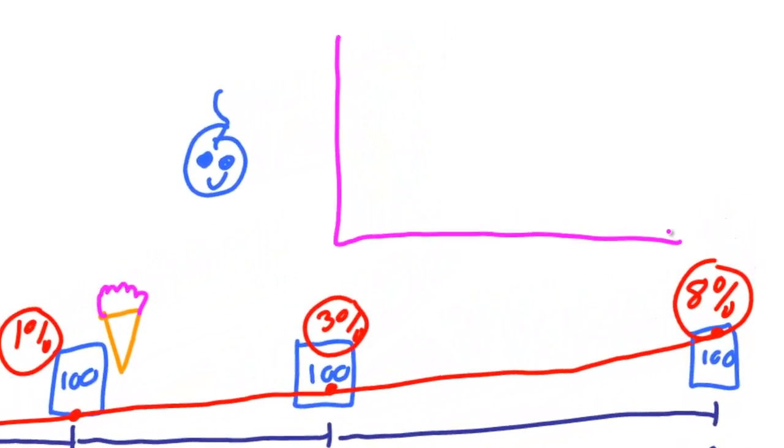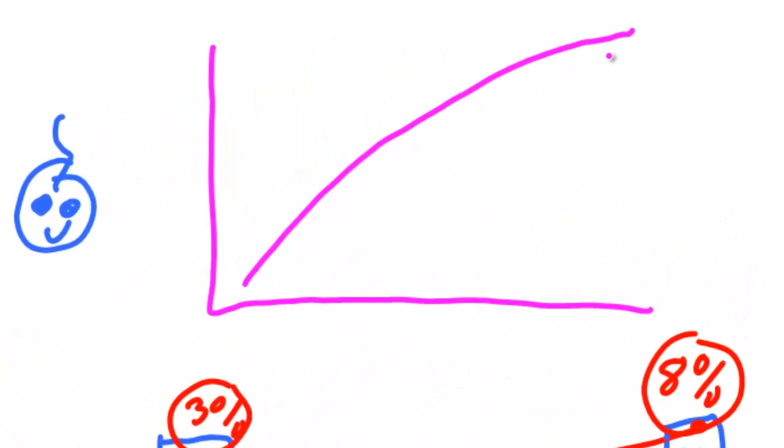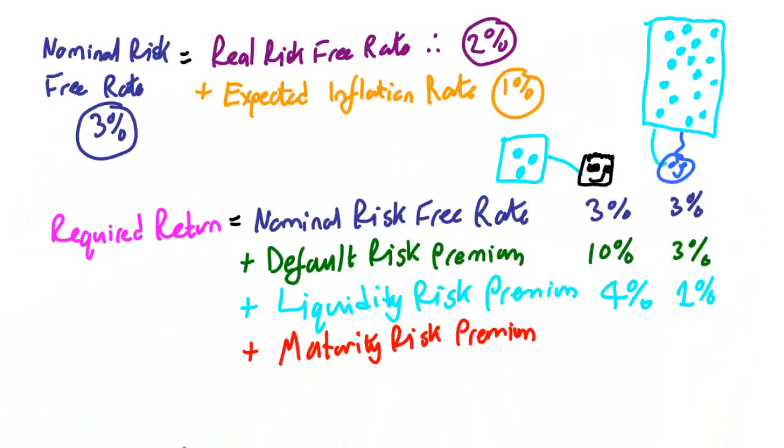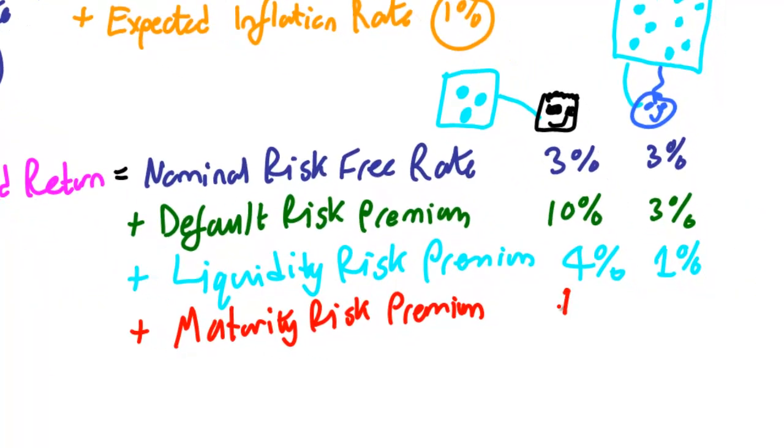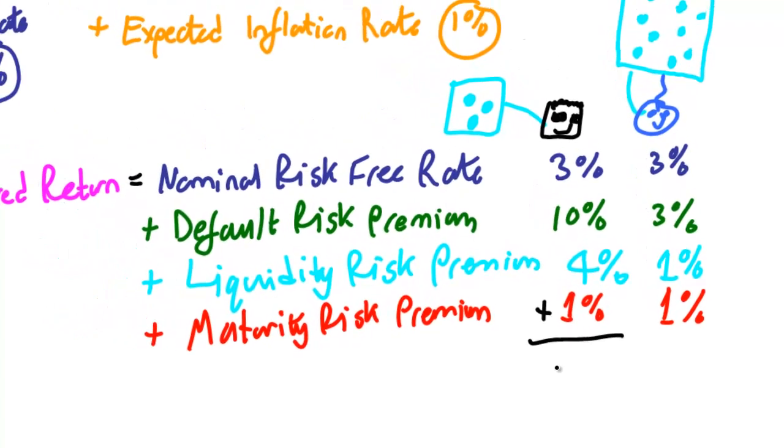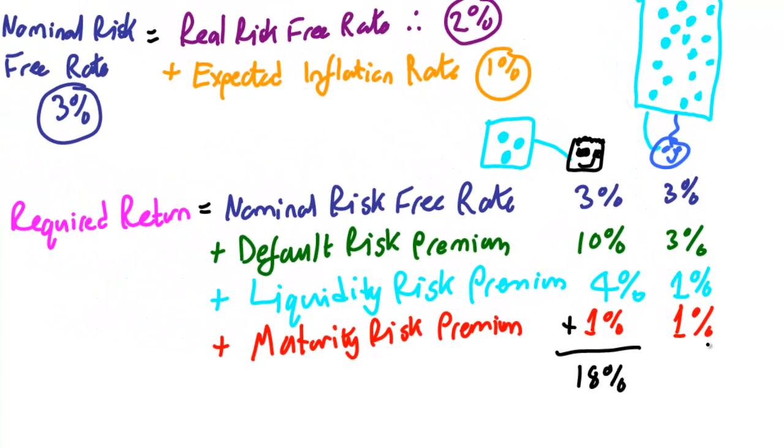This driving force is, incidentally, what drives the normal shape of a standard yield curve. But that's, fortunately, a subject for another day. Getting back to our investment choice, we decide that for a 2-year loan, we'll set a maturity risk premium of 1% on both Andy's dodgy jet skis and Sean's luxury yachts. We can now work out the required rates of return for both potential investments.